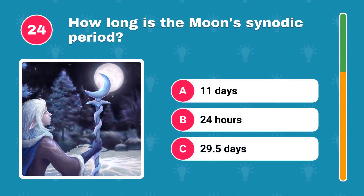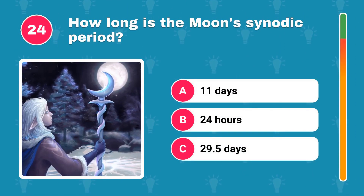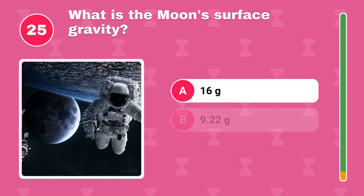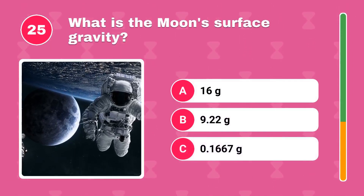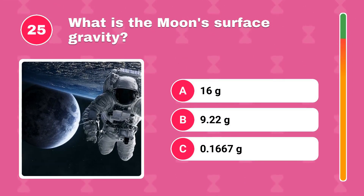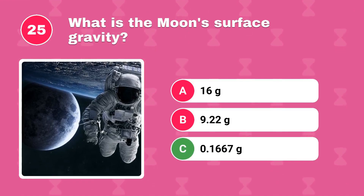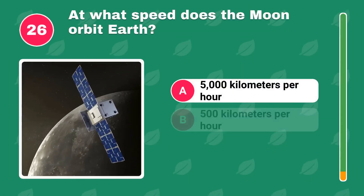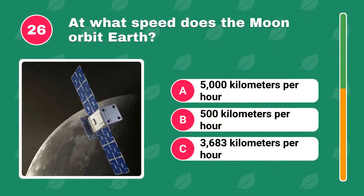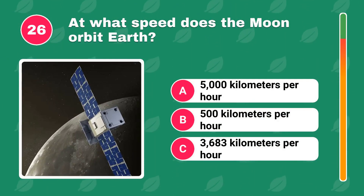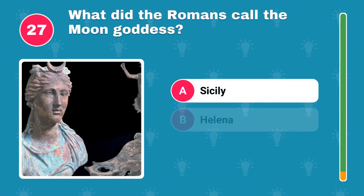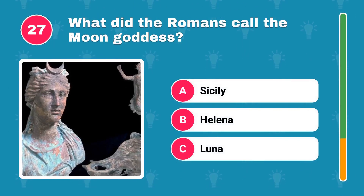How long is the moon's synodic period? At what speed does the moon orbit Earth? What did the Romans call the moon goddess?